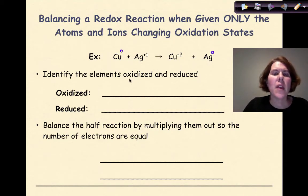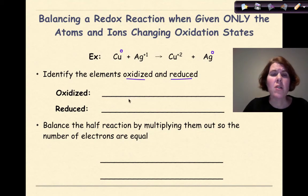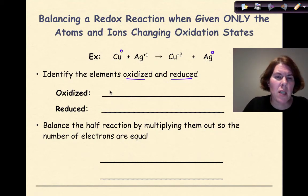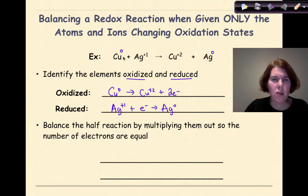We're going to look at these and just identify the elements oxidized and reduced. If I look at Cu, it's going from zero to plus two — that's going to be oxidized because the copper atom is becoming more positive. The Ag plus one is going to Ag zero — that's becoming more negative, so Ag plus one is going to be reduced. If I write what's oxidized: Cu zero is going to Cu plus two and losing two electrons, while Ag plus one is going to gain one electron and become Ag zero.